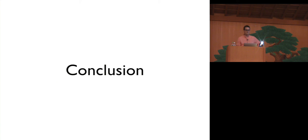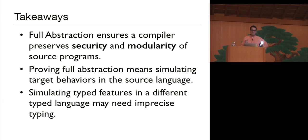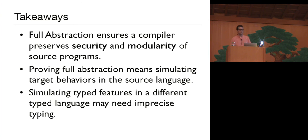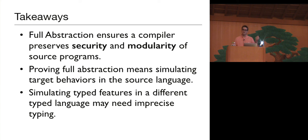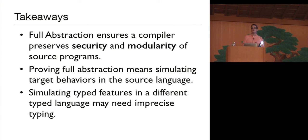To wrap up, some takeaways: first, full abstraction ensures the compiler preserves security and modularity of source programs, and it's very hard. Next, proving full abstraction means simulating target behaviors in the source language. Finally, simulating type features of one type system in another might necessitate imprecise typing to do it. Thank you.